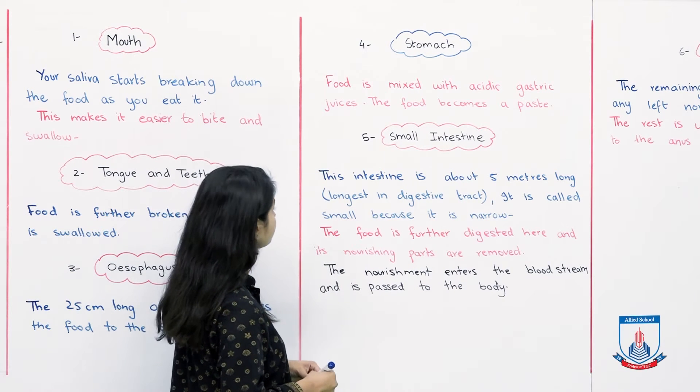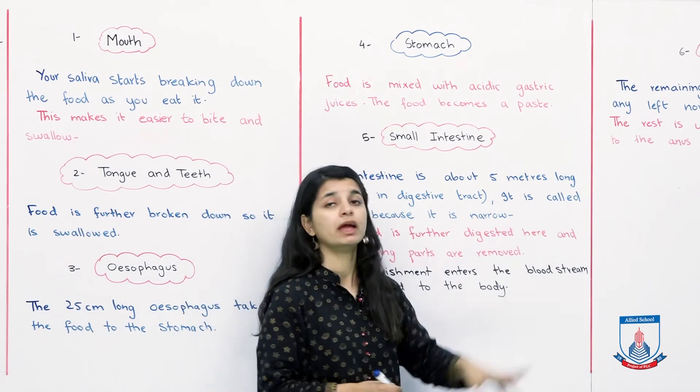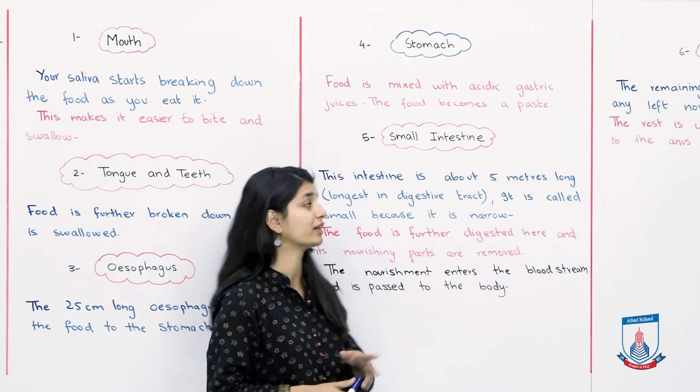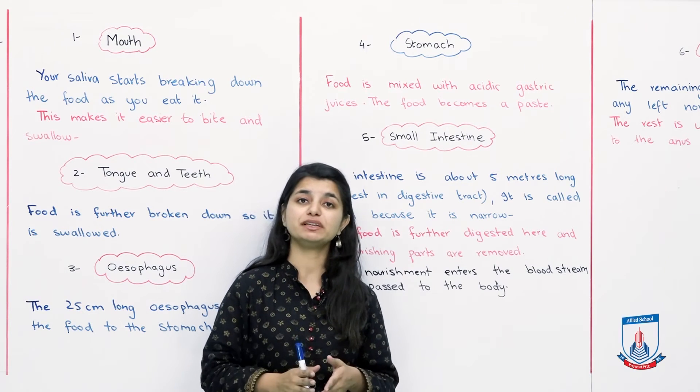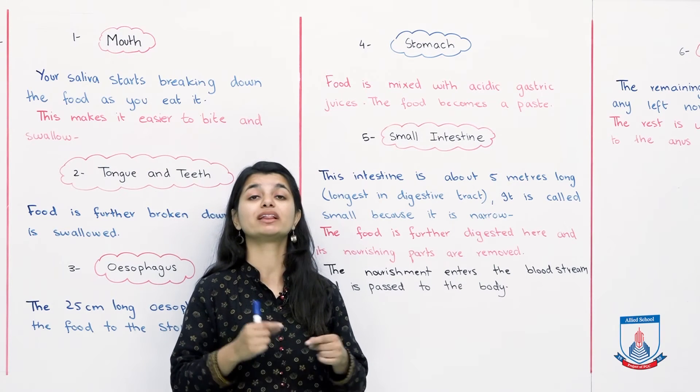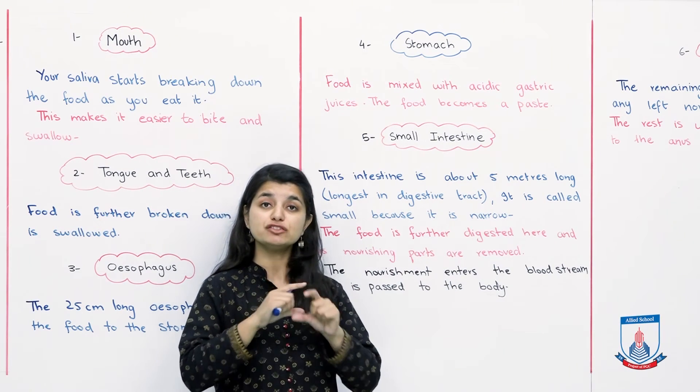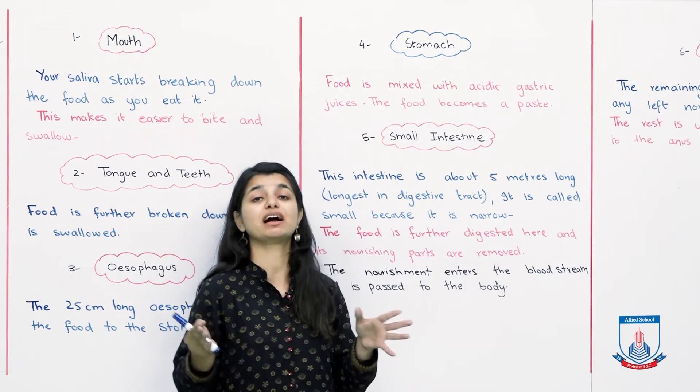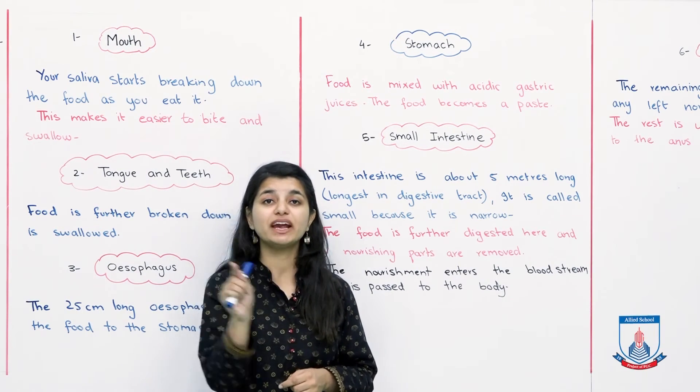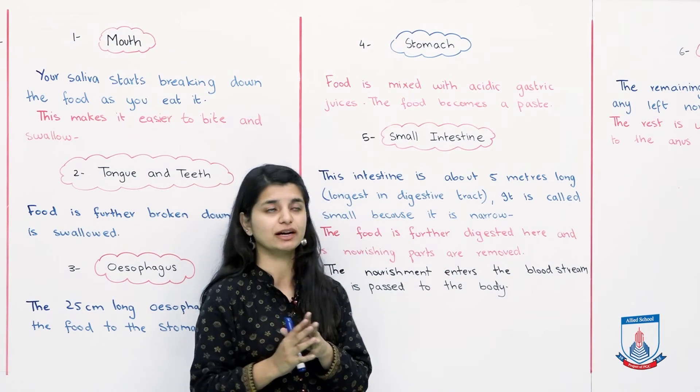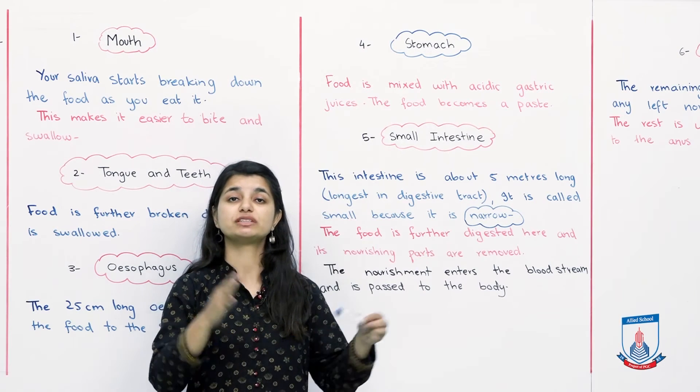What is happening in the small intestine? This intestine is about 5 meters long. It's the longest in the digestive tract but is called small because it is narrow. The whole digestive tract is about 8 meters, and the small intestine alone is about 5 meters. People confuse this - the small intestine is actually the longer one. The large intestine is larger in width but smaller in length. So the small intestine is narrow but very long, while the large intestine is wide but shorter in comparison.